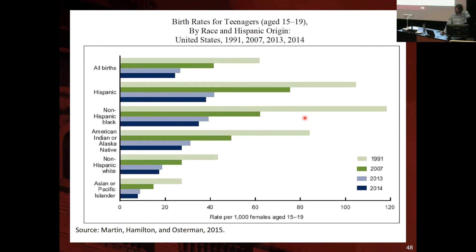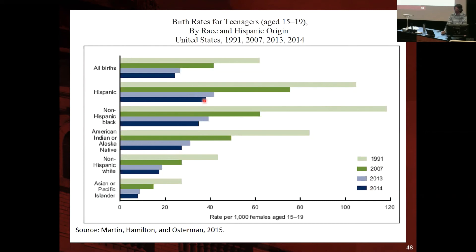These graphs show teenage fertility broken down by race and ethnicity. Among Hispanic women and non-Hispanic Black teenage women, they had the highest rates — non-Hispanic Black had the highest rates back in 1991, but they also experienced a decline. All groups experienced decline from 1991 to 2014 based on this data. Hispanics also experienced a decline, but in more recent rates they are higher than any other race/ethnicity group. Asian and Pacific Islander teenage women have the lowest fertility rates.